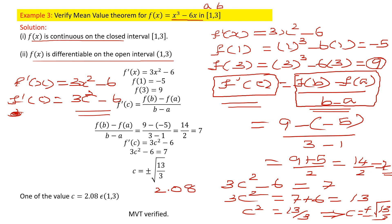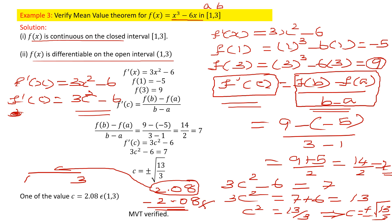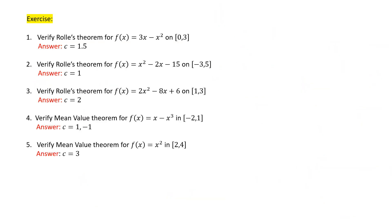Simplifying √(13/3) gives approximately 2.08. So we have two values: c = 2.08 and c = -2.08. The interval is [1, 3], so c = 2.08 lies within the interval and c = -2.08 lies outside. We take c = 2.08, which belongs to [1, 3], and declare that the mean value theorem is verified. Some practice problems are provided — the first three require verifying Rolle's theorem and the last two require verifying the mean value theorem. See you in the next video!